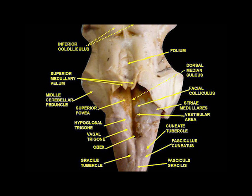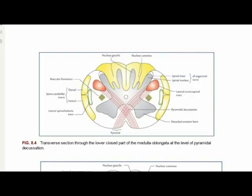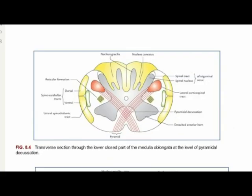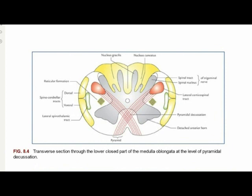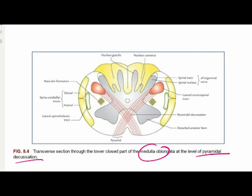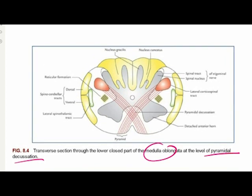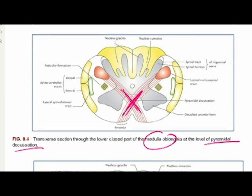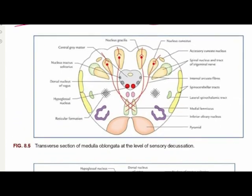This is the transverse section of the medulla at the level of the pyramidal decussation. This level passes through the inferior half of the medulla and closely resembles the spinal cord. The decussation of the pyramidal tract forms the most important feature of the medulla at this level.